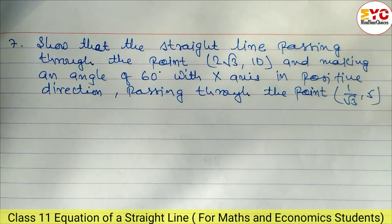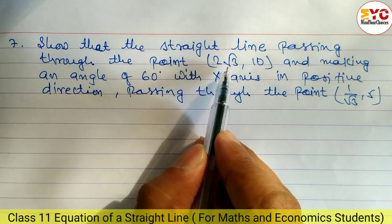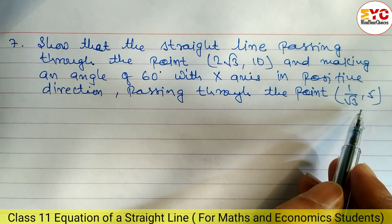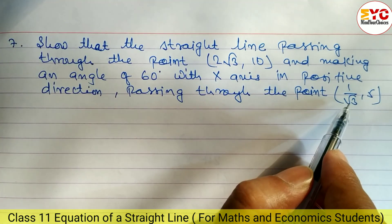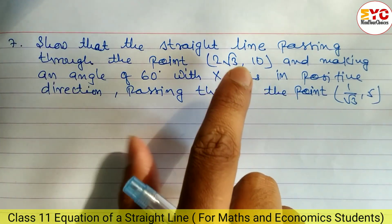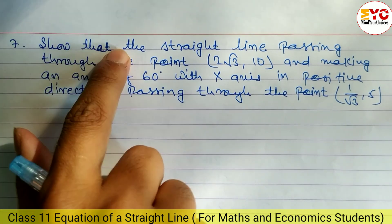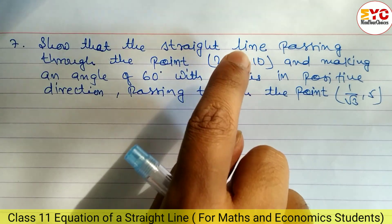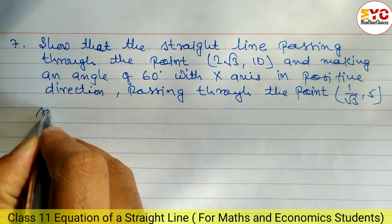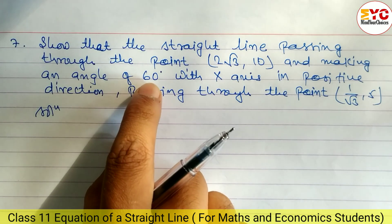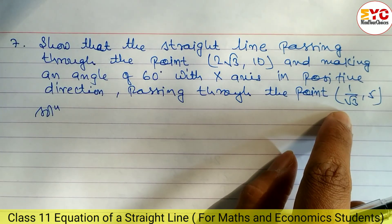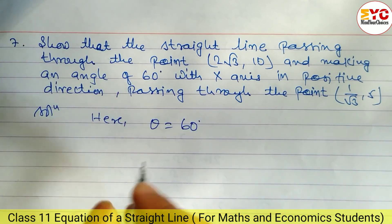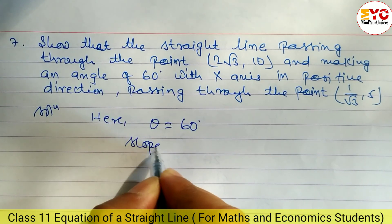Now question number 7: show that the straight line passing through the point (1/√3, 5) and making an angle of 60° with the x-axis also passes through the point (2√3, 10). Theta = 60°, so slope m = tan(60°) = √3.